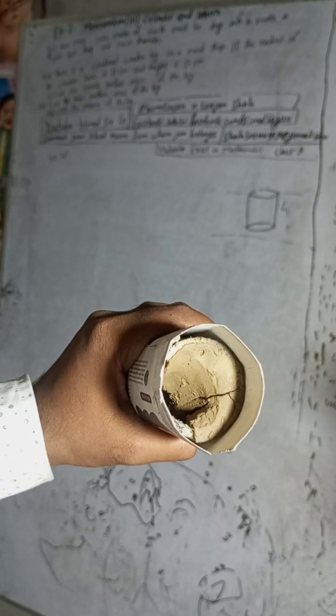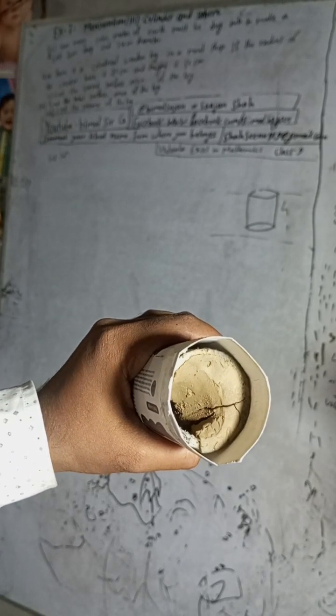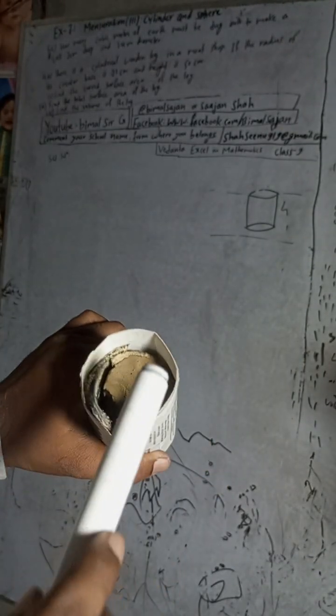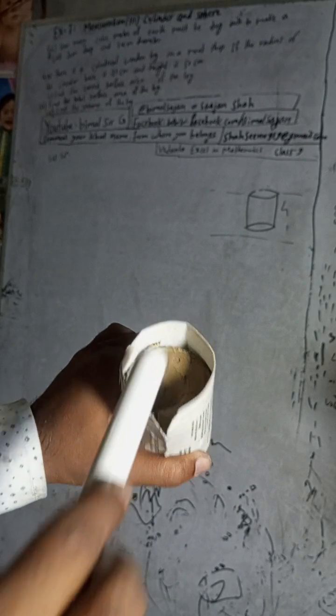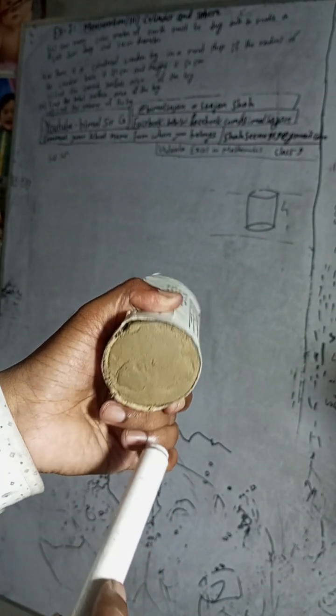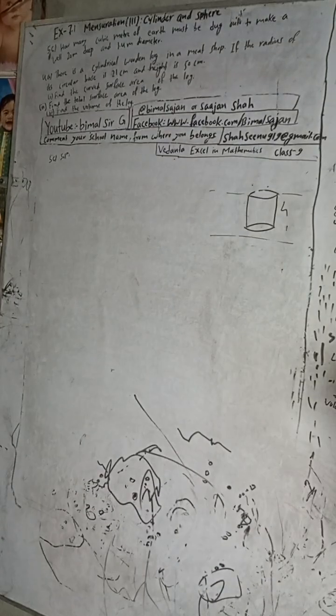20 meters deep and 1.4 meters diameter. So diameter means from this to this, passing through the center of this circle. This is called diameter. And deep means the height.